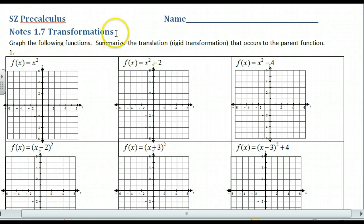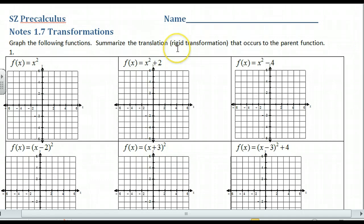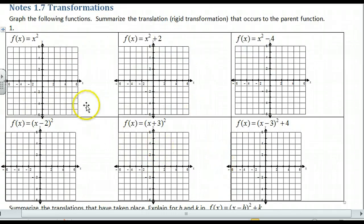We also have something called translations. The difference between translations and transformations is that translations are a form of transformations. Translations are a slide — the change is a slide. The very first ones are translations, which are rigid transformations. In other words, the shape does not change, but it is a change that occurs to the parent function. I want you to graph these and then see if you can summarize how each one changed from the original.